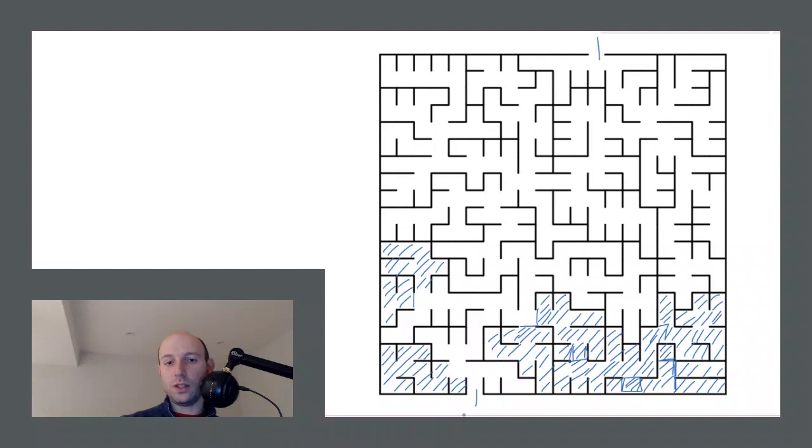Once you've colored in everywhere you should not go, the only thing that's left is where you can go. If your maze only has one solution, then once you've colored in all these dead ends, both the original ones and the ones created from your coloring, the only path left is that one correct solution.